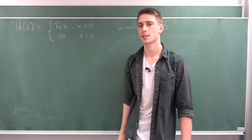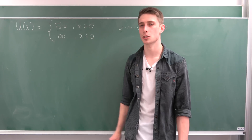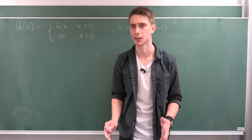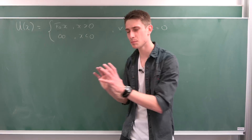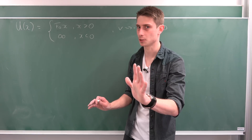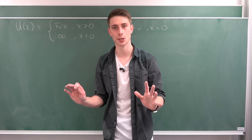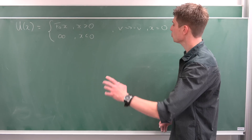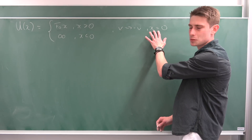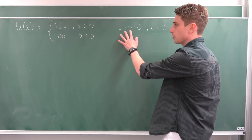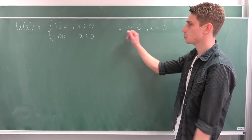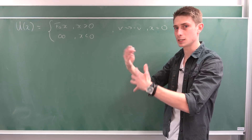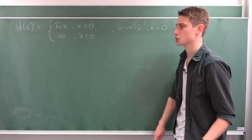If x is less than zero, our potential explodes to infinity. We have an infinitely high potential barrier and our little particle cannot pass through it — not in classical mechanics. In quantum mechanics it can; weird things happen in the quantum domain. And if x equals zero, we have instantaneous reflection: the particle reaches this point, its velocity changes sign,